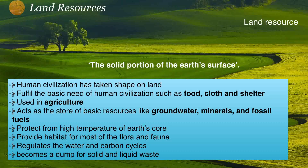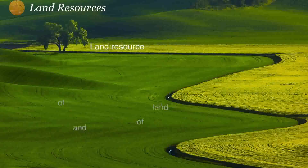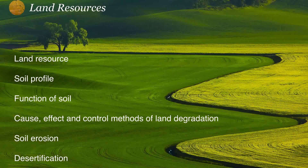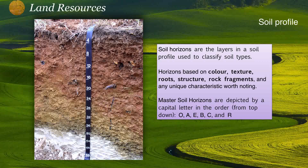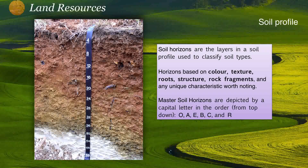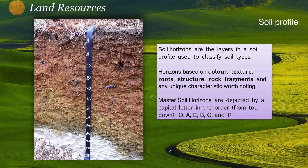Land also protects us from the high temperature of the earth's core, provides habitat for most of the flora and fauna, regulates the water and carbon cycles, and also becomes a dumping ground for solid and liquid waste. Now let's talk about the soil profile. The soil profile consists of different horizons or layers in the soil, each having different colors, textures, root structures, and rock fragments. The layers are divided into horizons named O, A, E, B, and C.